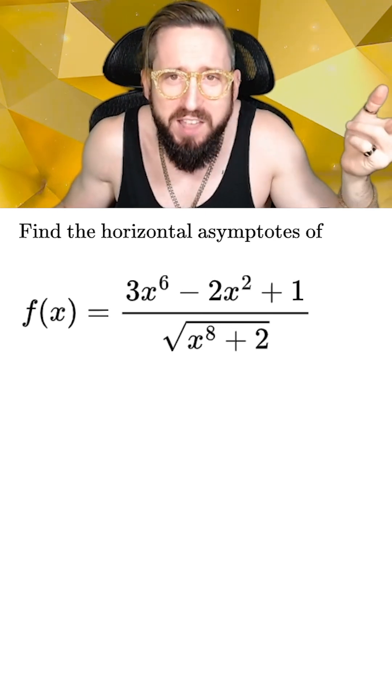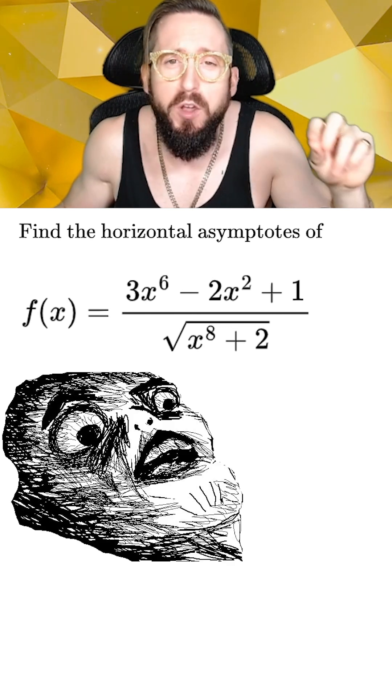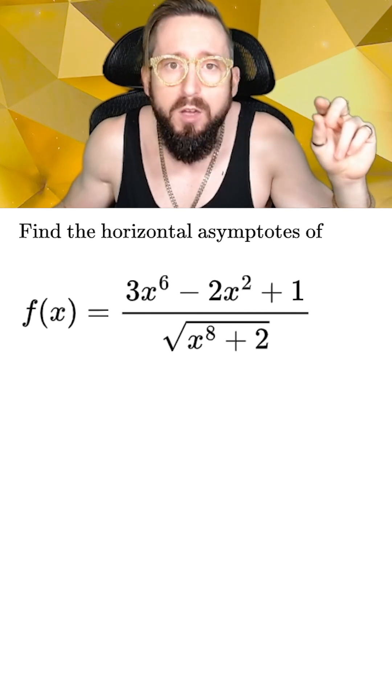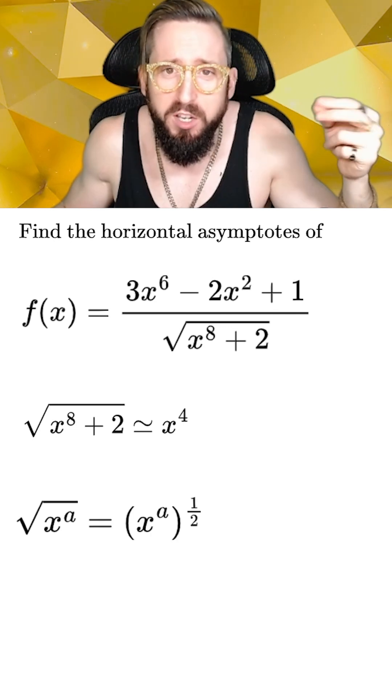At first glance, it would seem that the highest effective power of x is 8, since that's the biggest number we see in the exponents. However, there is a square root on the bottom x to the 8, which will end up cutting its effective power to 4. This is because square roots are the same as raising a number to the 1 half.